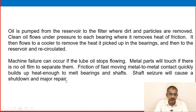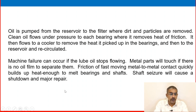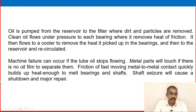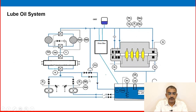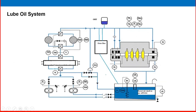Machine failure can occur if the lube oil stops flowing. Metal parts will touch if there is no oil film to separate them. Friction from fast-moving metal-to-metal contact quickly builds up enough heat to melt bearings and the shaft, causing a shutdown and major repair. This is why the lube oil system is so critical.